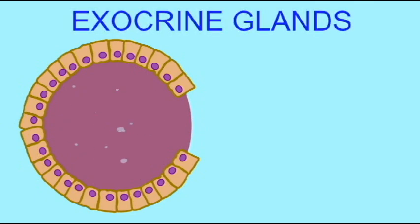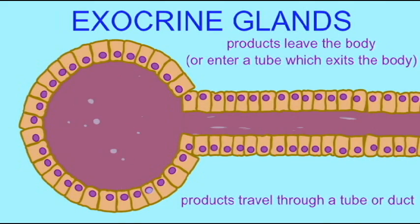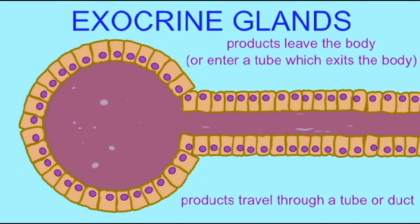Exocrine glands are made of epithelia, and these glands make products which leave the body — either leave the body outright, such as sweat, or enter a tube which exits the body. This includes digestive tract secretions, reproductive tract secretions, and anything which would enter the respiratory tract, the urinary tract, etc. So exocrine secretions leave the body.